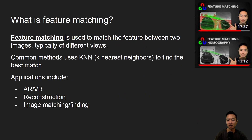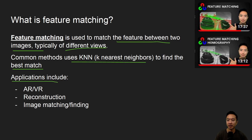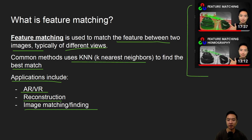So what is feature matching? Once you get the features using your feature detector, the idea of matching is to match features between two images, and typically these two images will be different views. Common methods used include k-nearest neighbors to find the best match, usually using distance as your metric. Applications of feature matching could include AR, VR, reconstruction, or image retrieval — for example, finding a picture of a cat on your phone.